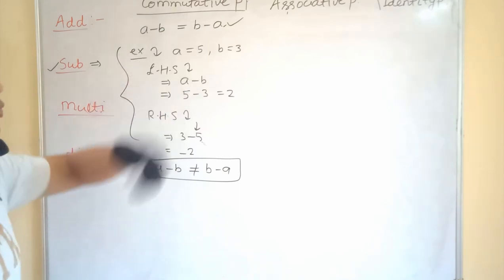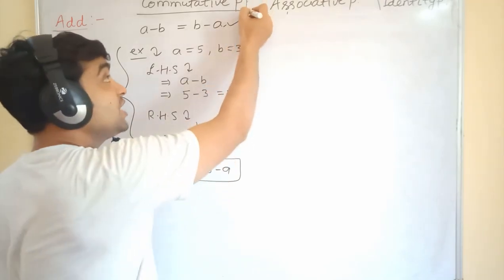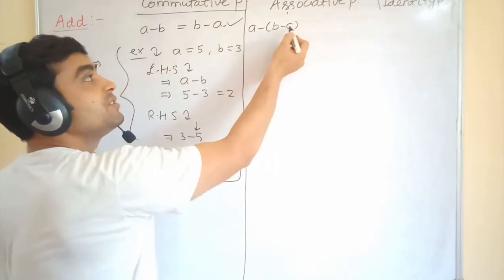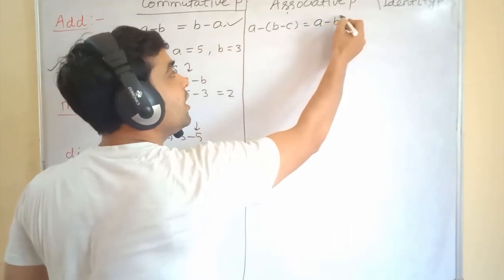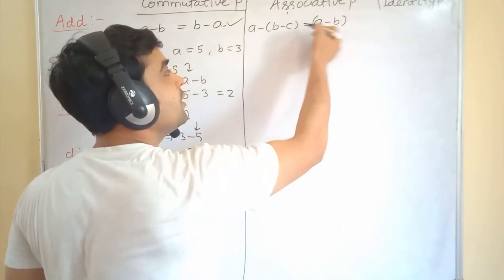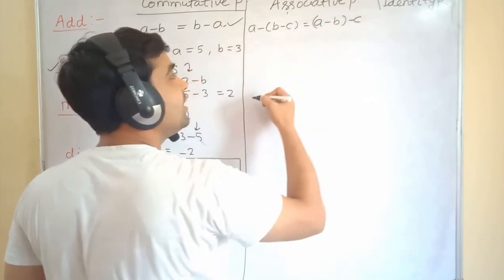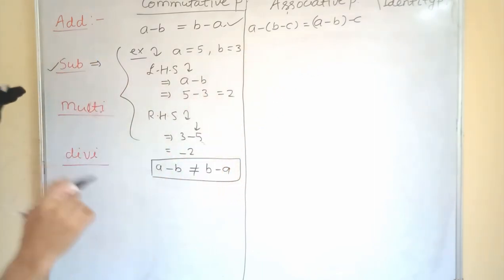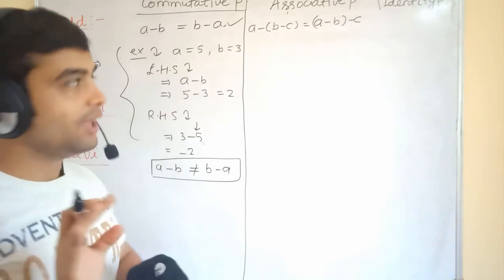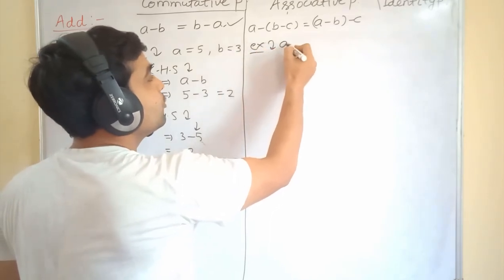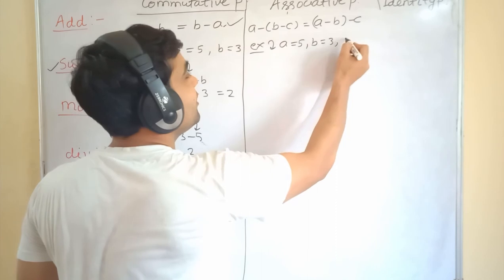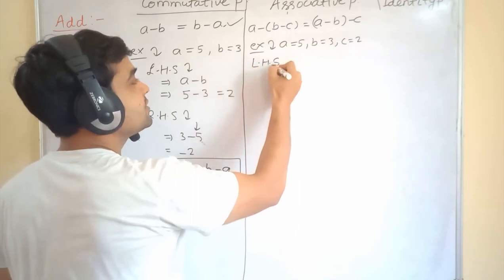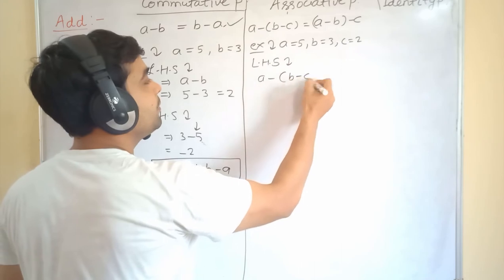Now we are going to see associative property for subtraction. According to it, a − (b − c) must be equal to (a − b) − c. Here we associate b with c on the LHS and b with a on the RHS. We will check whether they are equal or not. Taking a = 5, b = 3, c = 2.